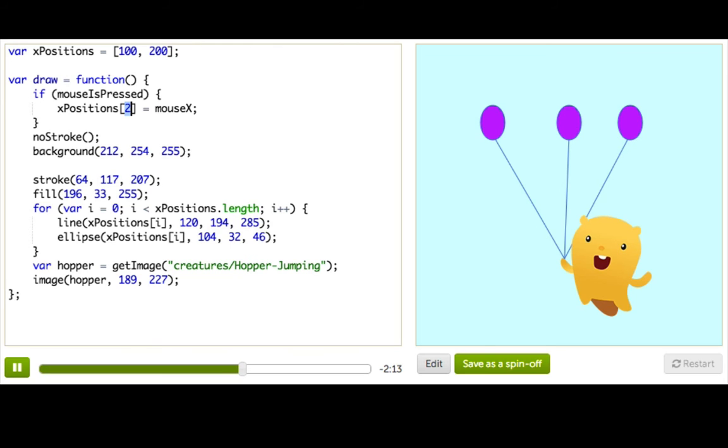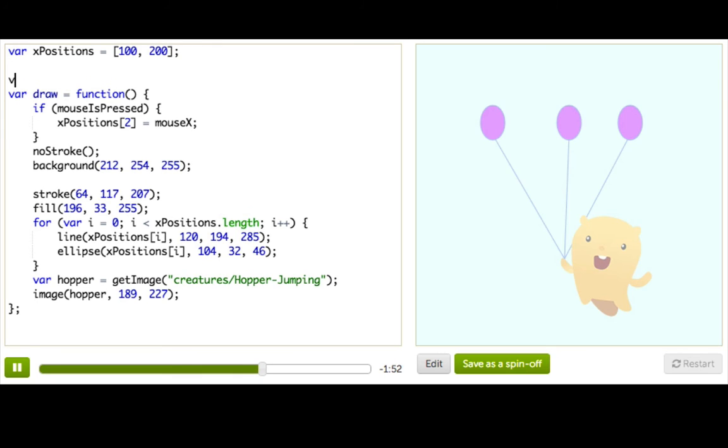So that's cool, but what we really want is we want to let the user make tons of balloons, right? So every time the user clicks, there's a new balloon. So that means that we need to be constantly incrementing the index of the array element that we're storing it in, right? So we don't want it to be two every time. We want it to be two and then three and then four and then five and then six, etc.